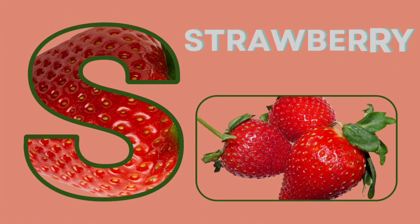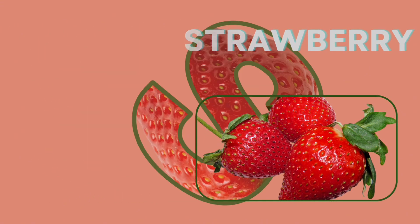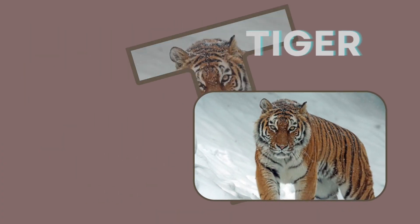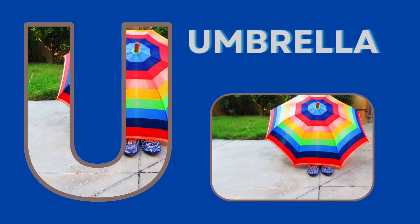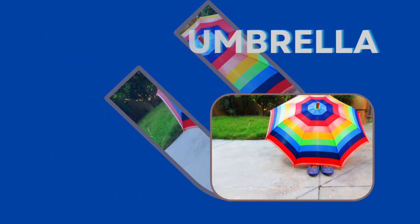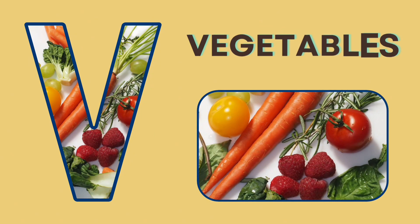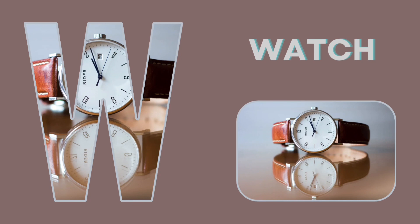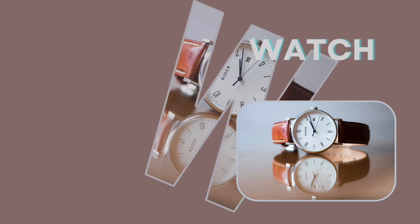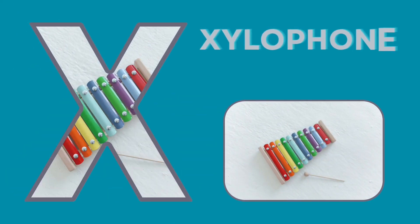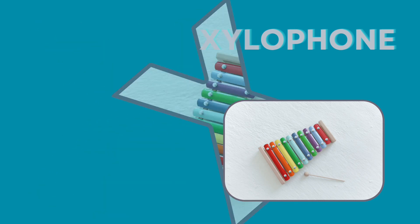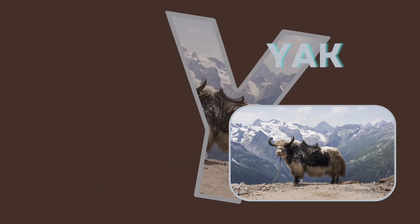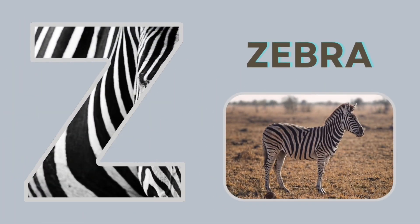S for strawberry. T for tiger. U for umbrella. V for vegetable. W for watch. X for xylophone. Y for yak. Z for zebra.